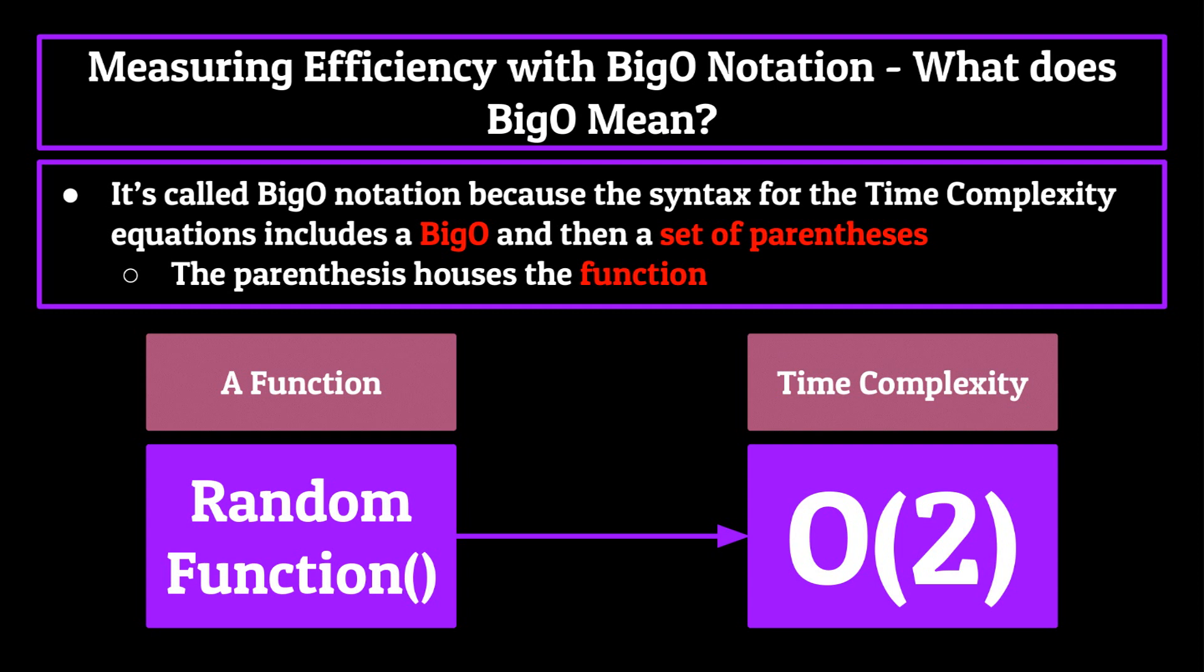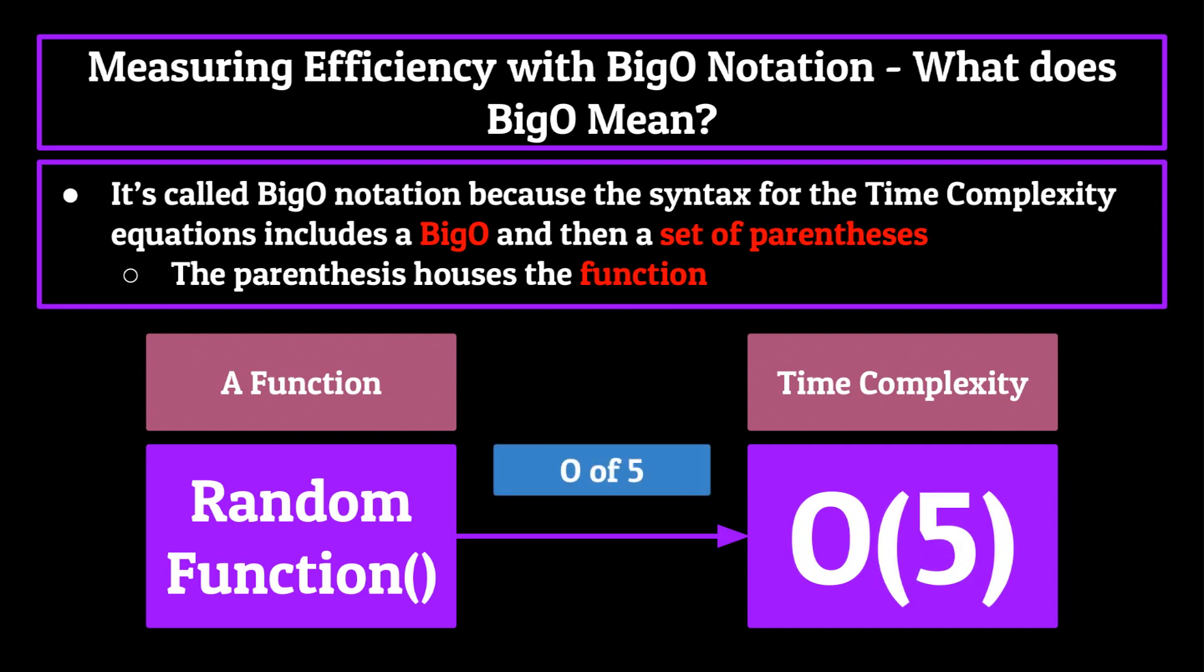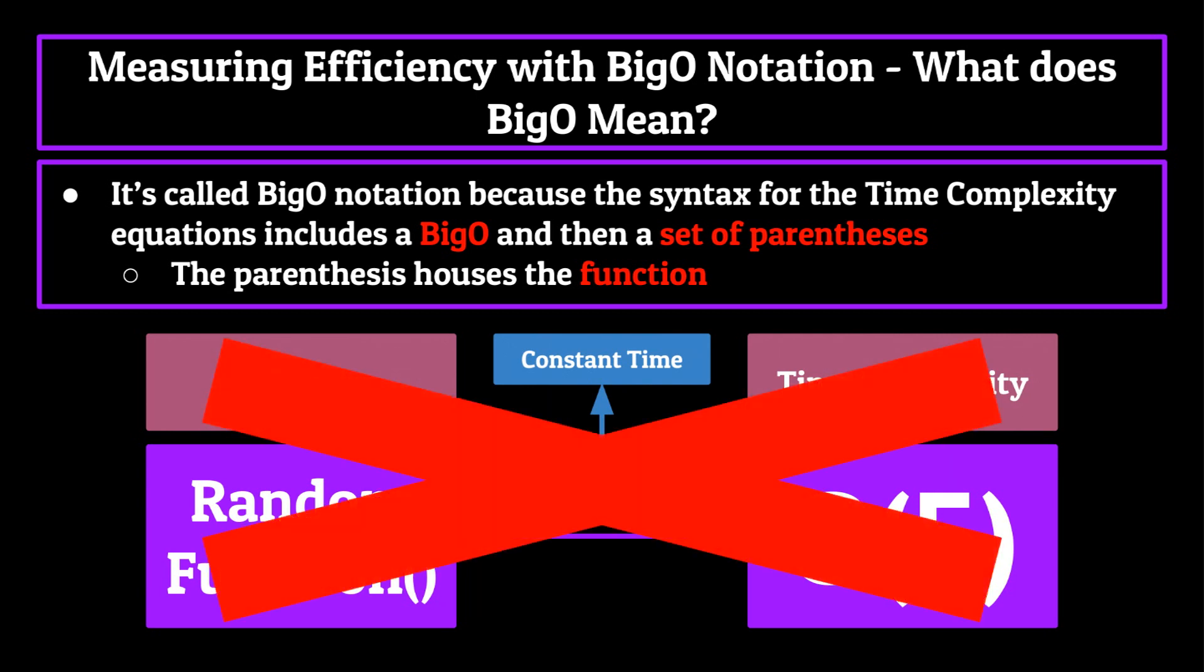For this fake function, let's say its time complexity equation was the one shown on your screen now. We pronounce the time complexity equation as O of 2, meaning it takes two operations from the computer before our make-believe function can finish. If the time complexity equation was O with a 5 in the parentheses instead, it would be O of 5, and so on. These are examples of time complexity equations which run in constant time, meaning no matter the size of our data set, it will always take the same number of instructions to run.